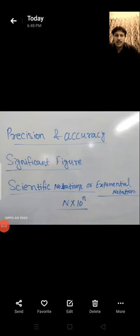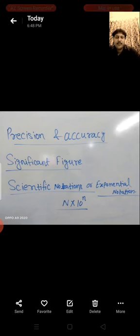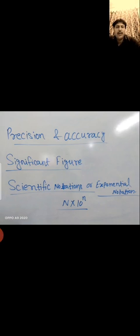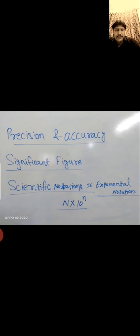Now, in class 11 and 12, only theoretical parts are not there in chemistry — the numerical part is also there, meaning we have to solve numericals and calculation problems. So I want to start with a very small topic related to measurement. The topics are: precision and accuracy, significant figures, and scientific notation or exponential notation.